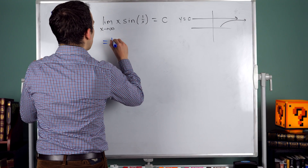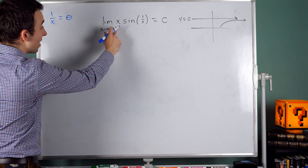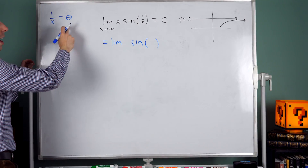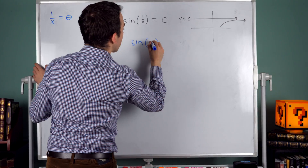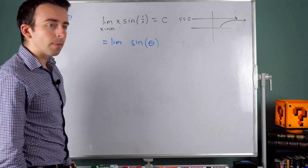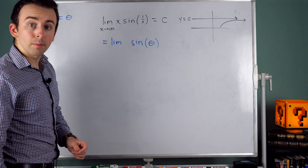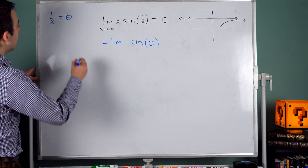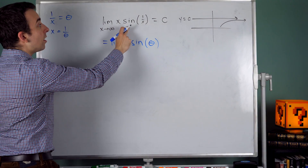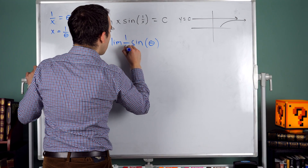Let's proceed with caution. Ignore the x for a second — sine of 1 over x: what is that? Well, 1 over x is equal to theta, so where we had 1 over x, I'll put theta. And what about x? What is x? Well, if theta is the reciprocal of x, that means x is the reciprocal of theta. So x must be equal to 1 over theta. So I have sine of 1 over x, which is sine of theta, and I have x, which is 1 over theta.